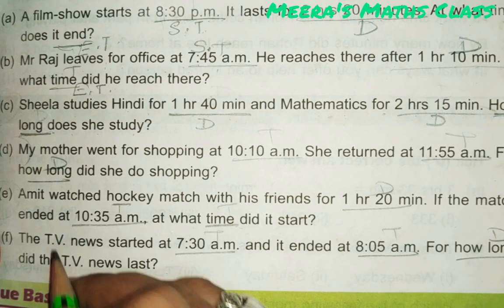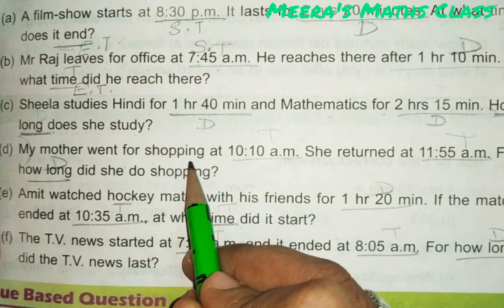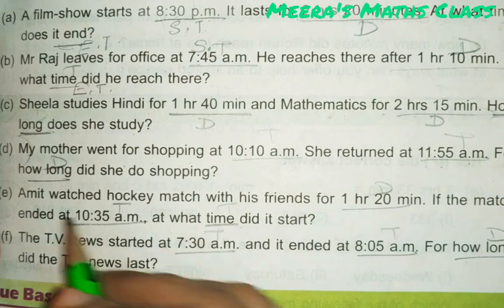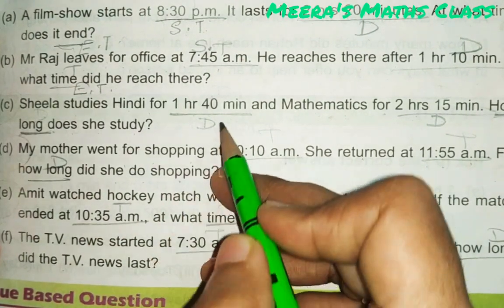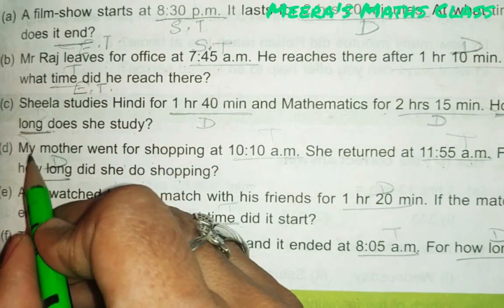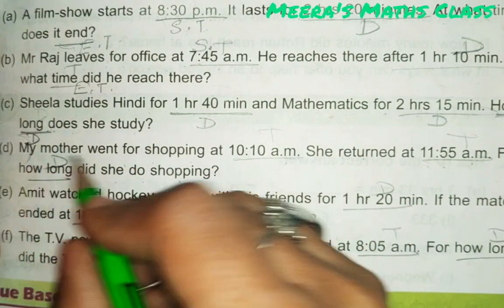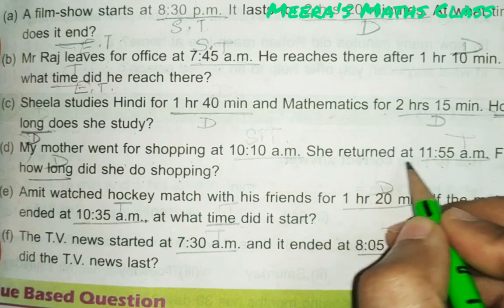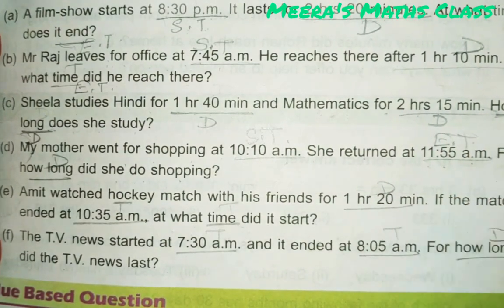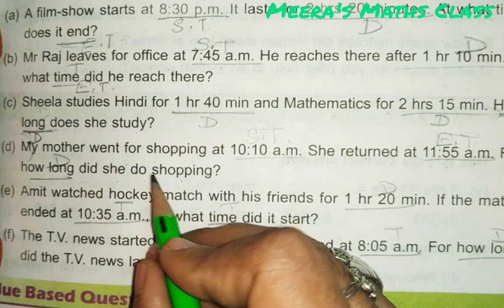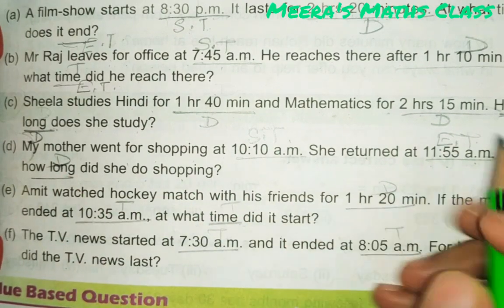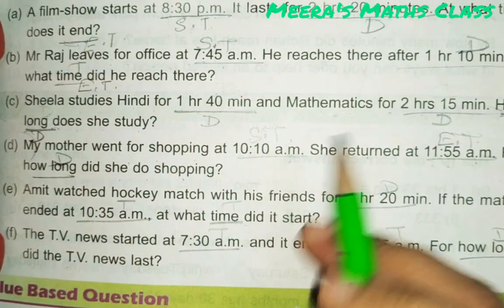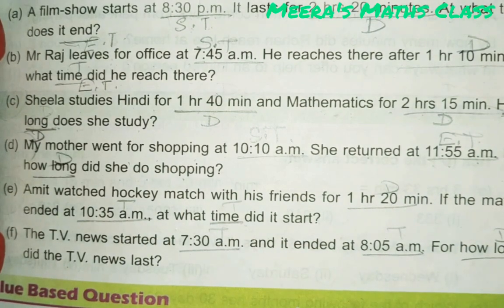Now let's go to the next question, part D. My mother went for shopping at 10:10 a.m. She returned at 11:55 a.m. For how long did she do shopping? Here, going for shopping at 10:10 a.m. is the starting time, and returned at 11:55 a.m. is the ending time. 'For how long' means duration is asked. So starting time and ending time are given, and you have to find the duration.